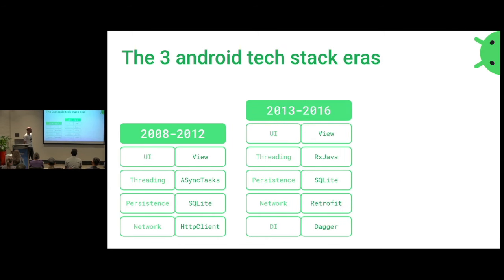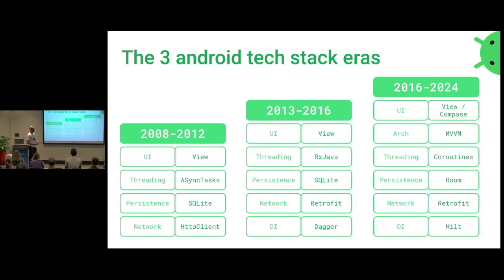As Android development got a lot more professional, the community got involved and we got a lot more libraries: RxJava for threading, Retrofit was a big one for networking, and Dagger was one of the first dependency injectors. And later on, in 2016, things got really professional and more guided — Google provided the MVVM recommendation and the ViewModel. This is also the year they released the Room abstraction layer, also Hilt for dependency injection based on Dagger 2, and Retrofit 2.